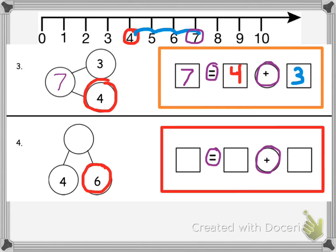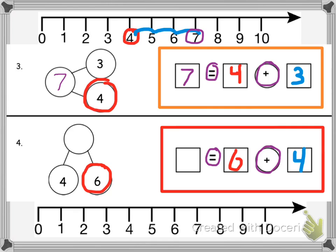On my next addition problem, I'm going to look at my number bond. The greatest number is 6, so I circled 6 and placed it in the number sentence. My other addend is 4, and I placed 4 in the number sentence. I'm going to look at my number line, start with 6, and count over 4, which takes me to the answer of 10. So I know that 6 plus 4 is 10.